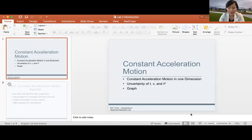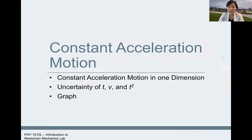Today's lab is constant acceleration. We have talked about this and your instructor for the lecture course has talked about this in class already — if we release an object from the top of a ramp, it will go down the ramp with constant acceleration. We're looking at such a scenario and taking data in our lab today. We're going to make graphs of velocity versus time and also position versus time squared.